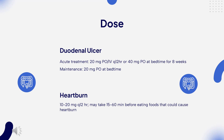Dose: Duodenal ulcer — Acute treatment: 20 mg orally every 12 hours or 40 mg orally at bedtime for 8 weeks. Maintenance: 20 mg orally at bedtime. Reduction of recurrence risk: 20 mg orally once daily for 1 year or as clinically indicated. Benign gastric ulcer: 40 mg orally at bedtime up to 8 weeks. GERD non-erosive: 20 mg every 12 hours up to 6 weeks. Erosive, diagnosed by endoscopy: 20 mg orally every 12 hours for up to 12 weeks. Hypersecretory conditions: 20 mg orally every 6 hours, may increase up to 160 mg every 6 hours. Heartburn: 10–20 mg every 12 hours, may take 15–60 minutes before eating foods that could cause heartburn.